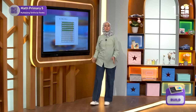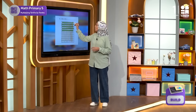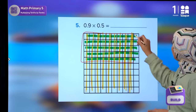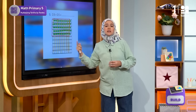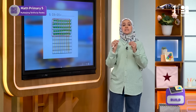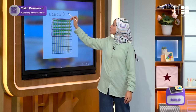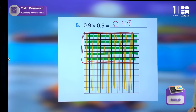Now, after we count the overlapping squares, what do we notice? We notice the sum is 45 squares. So the answer is 45 hundredths. Let's write it together — the answer is 0.45.